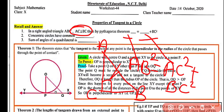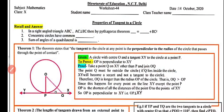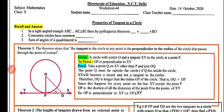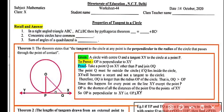Concentric circles have a common center — circles which share a common center are known as concentric circles. So the answer is 'center'. Also keep in mind: the sum of angles of a quadrilateral is 360 degrees.